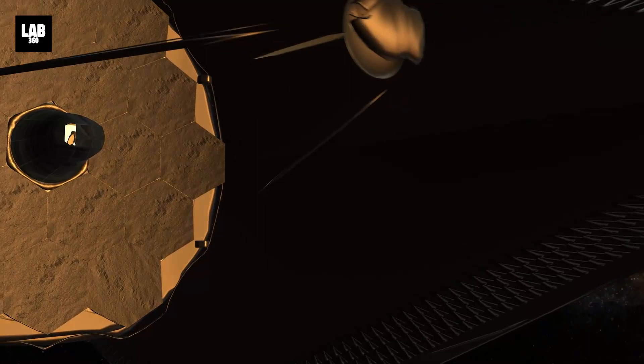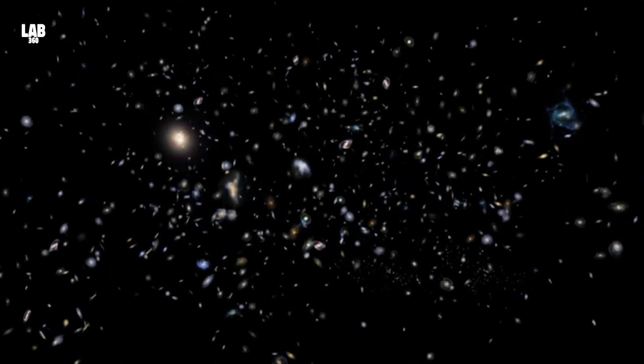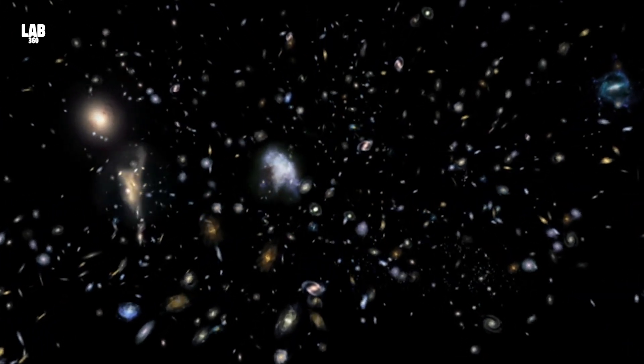But boy did Webb prove us wrong. Yes, in a surprising twist, scientists have identified more than 700 candidate galaxies near the edge of the universe.